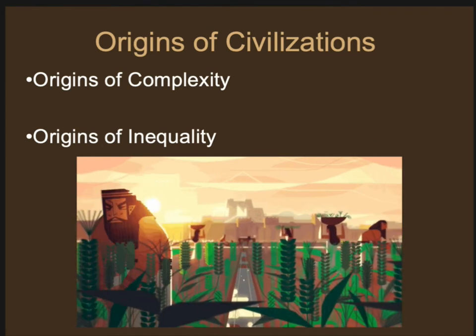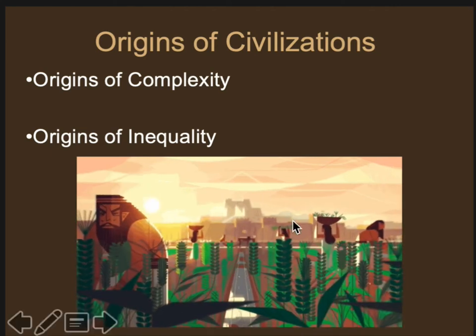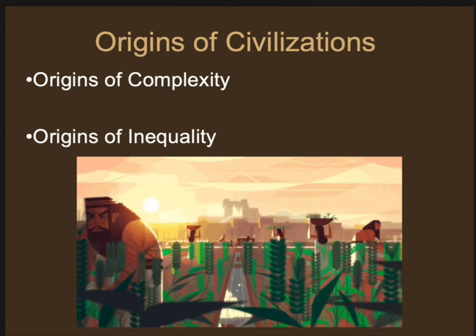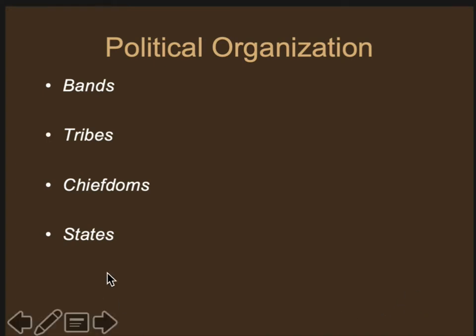How do we go from small-scale farming villages to really large cities? This is one of the big picture questions I was interested in during grad school — the beginnings of civilization in ancient Mesopotamia. Archaeologists use anthropology to understand this. Anthropologists divide groups by how they're organized into four categories: bands, tribes, chiefdoms, and states — going from smaller to larger scale, representing increasing complexity. We'll talk about what complexity actually means as we go.